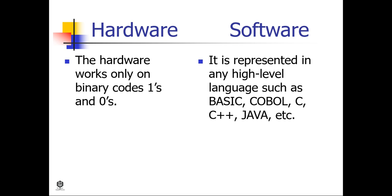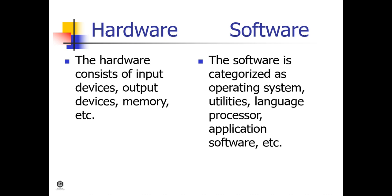Hardware works only on binary codes — ones and zeros — while software is represented in any high-level language such as BASIC, COBOL, C, C++, Java, and so on. Hardware consists of input devices, output devices, and memory, while software is categorized as operating system, utilities, language processor, and application software.